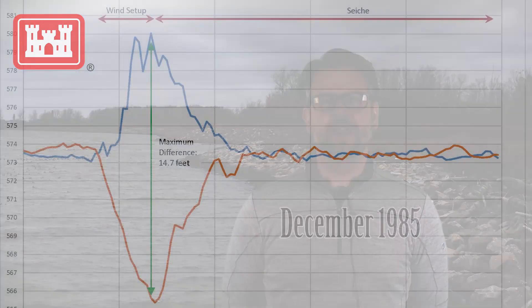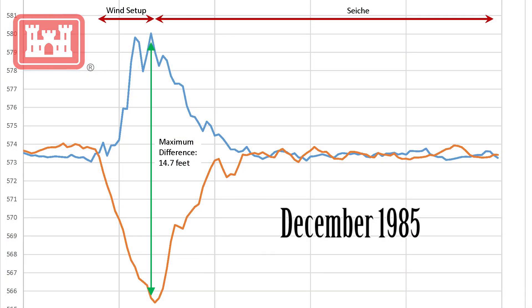The largest difference occurred in December 1985, when the level of Buffalo was nearly 15 feet higher than the level at Toledo.